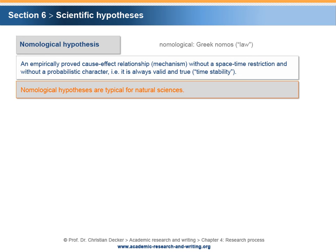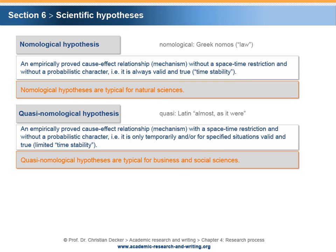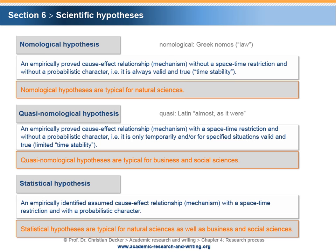A scientific hypothesis can also have the form of a quasi-nomological hypothesis. The term quasi is the Latin word meaning almost or as it were. A quasi-nomological hypothesis can be defined as an empirically proved cause-effect relationship or mechanism, with a space-time restriction and without a probabilistic character — that is, it is only temporarily and/or for specified situations valid and true. It is characterized by limited time stability. Quasi-nomological hypotheses are typical for business and social sciences. A statistical hypothesis is defined as an empirically identified assumed cause-effect relationship or mechanism, with a space-time restriction and with a probabilistic character. Statistical hypotheses are typical for natural sciences as well as business and social sciences.